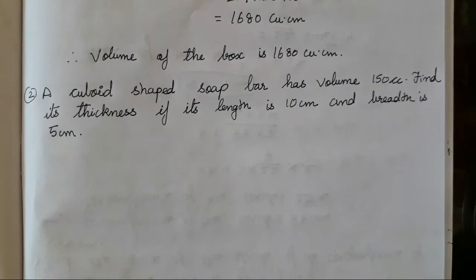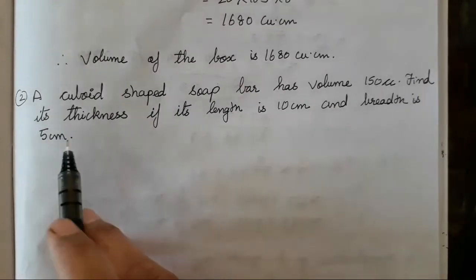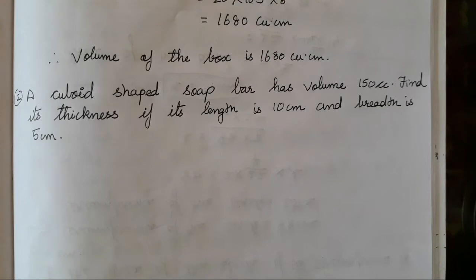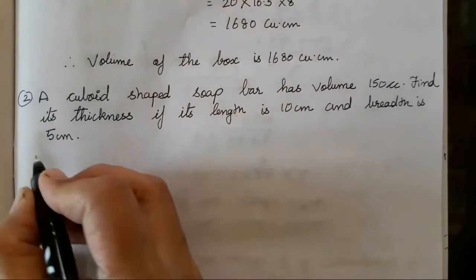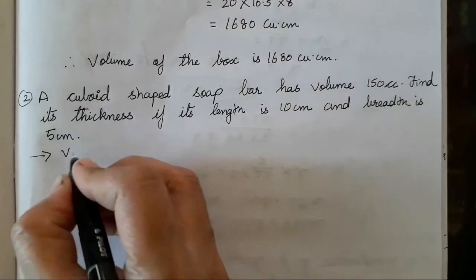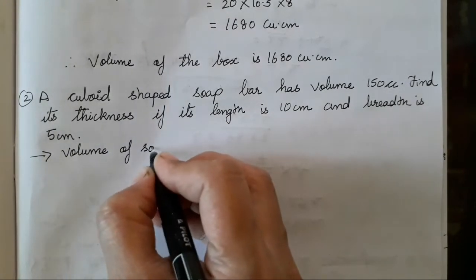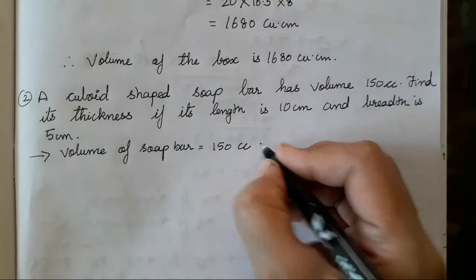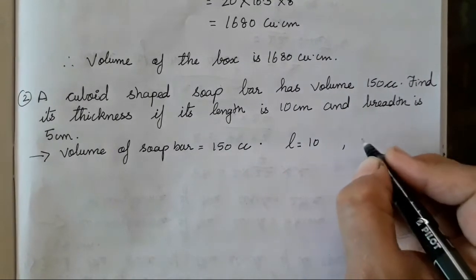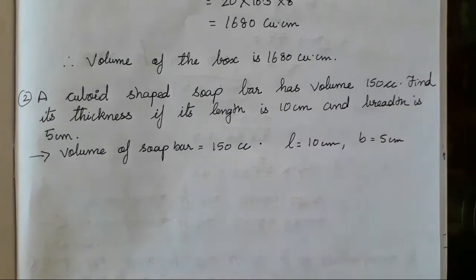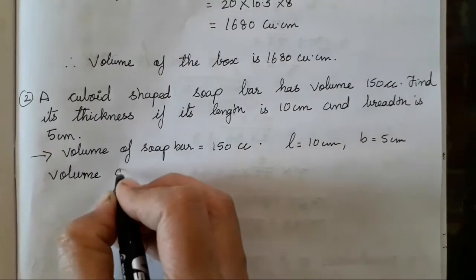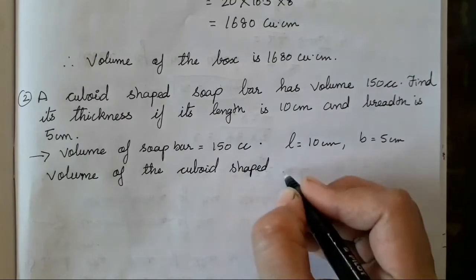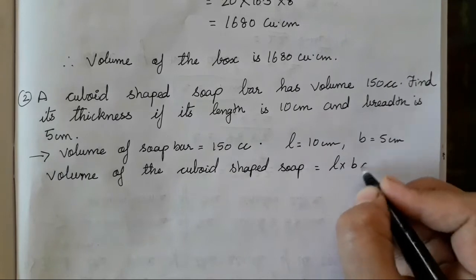Now, the cuboid shaped soap bar has volume 150 cc. Find its thickness if length is 10 cm and breadth is 5 cm. We will use the same formula. The only thing we have to find is H, the height. So volume of soap bar is 150 cc. You can write cubic cm or cc also. L is 10, B is 5 cm. The formula is volume of the cuboid shaped soap equals length into breadth into height.